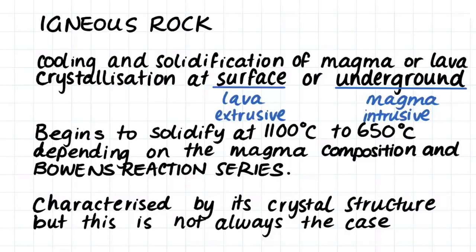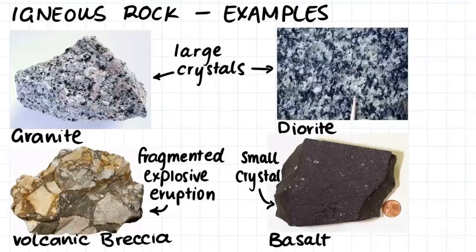Igneous rock is often characterized by having a crystal structure, however this is not always the case. The crystal structure comes from the fact that the molten rock solidifies, and the crystals can either be small or large depending on whether the rock has cooled quickly or slowly. Here are a few examples of igneous rocks just to give you an idea of what they look like. I have labeled the rocks with their names but don't worry too much about this right now. We will be covering how to classify these igneous rocks in later videos.